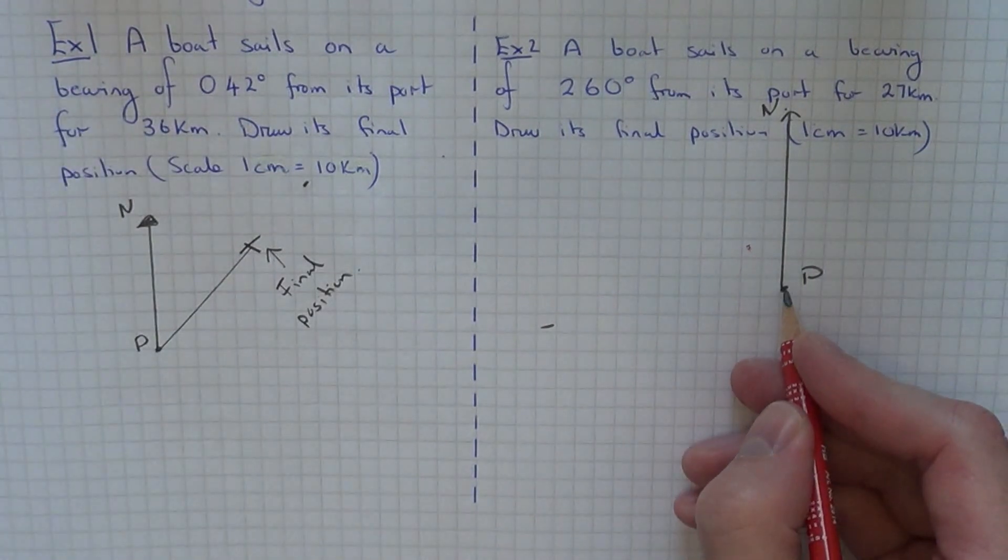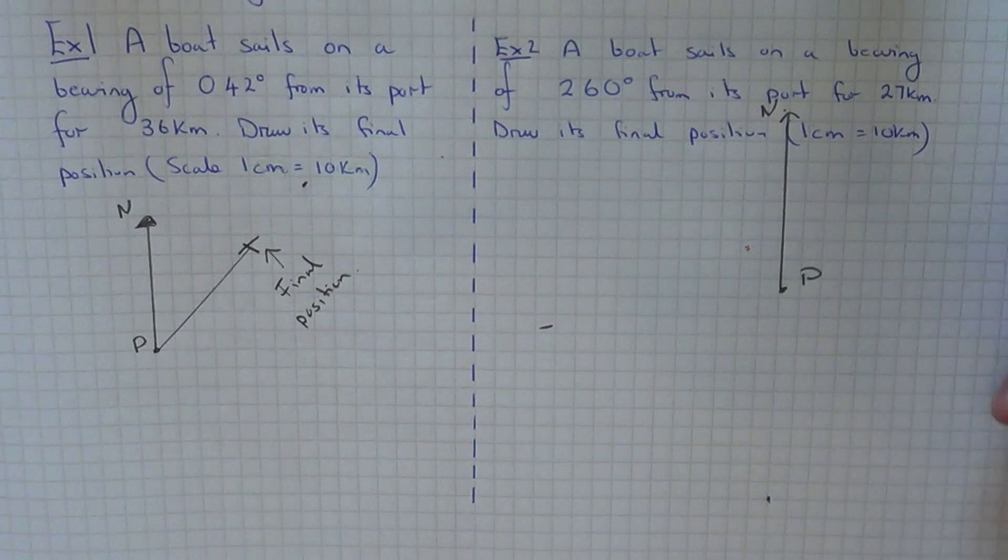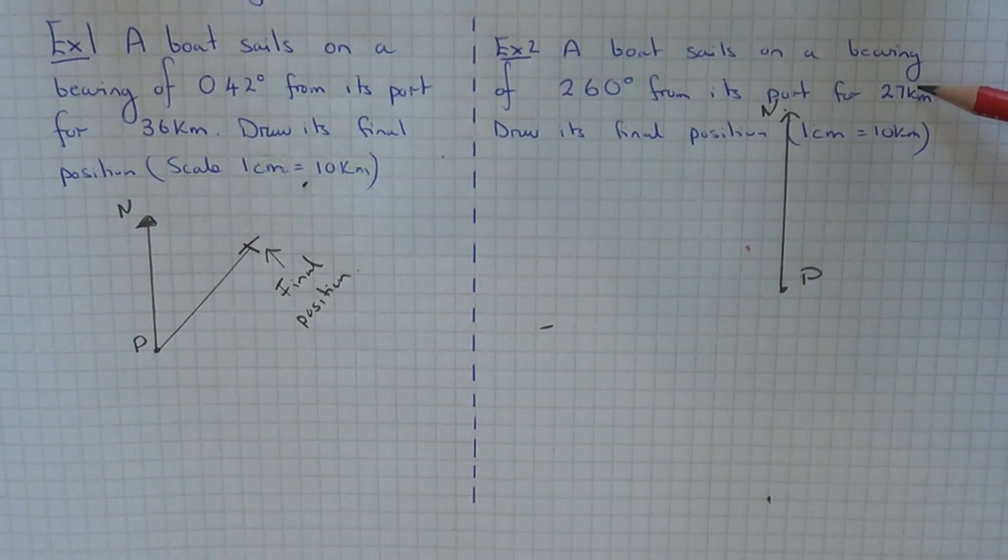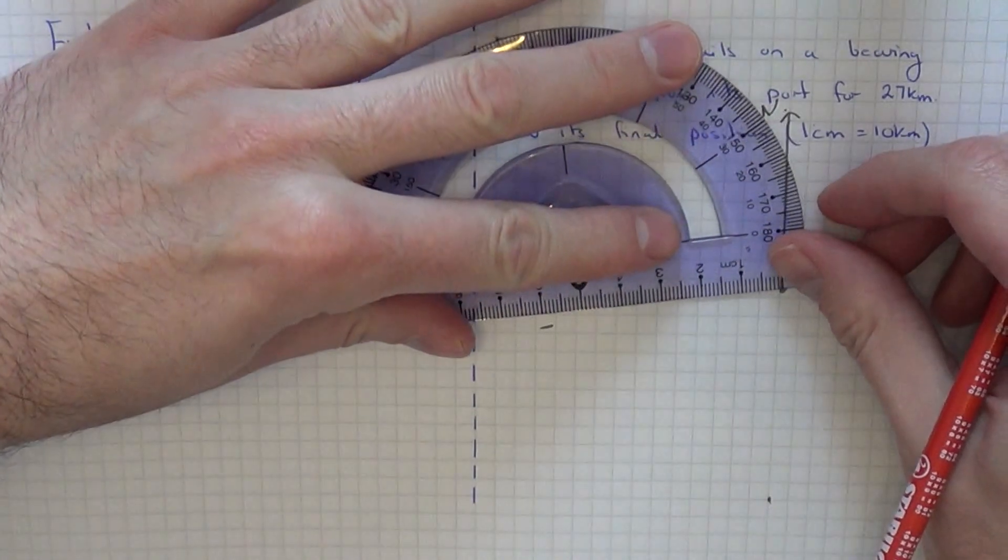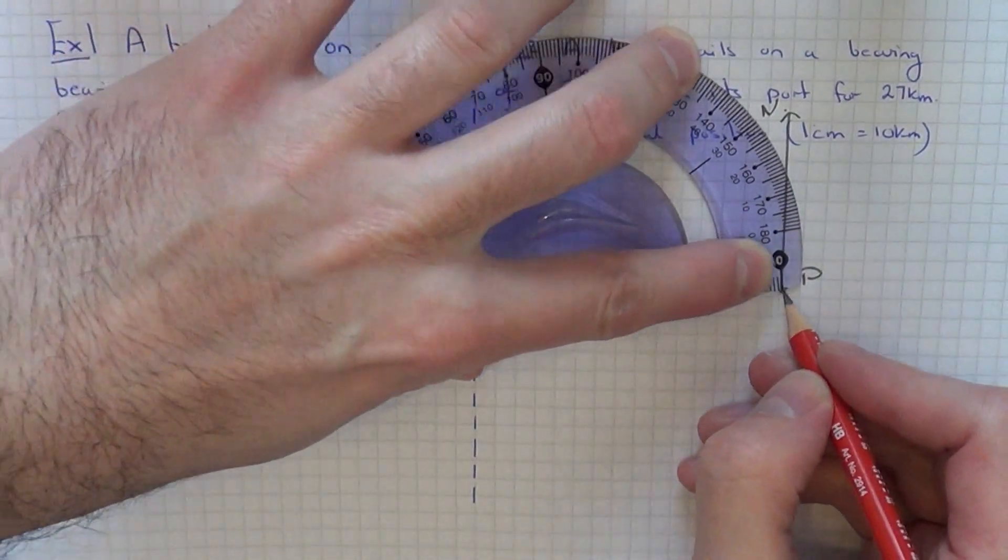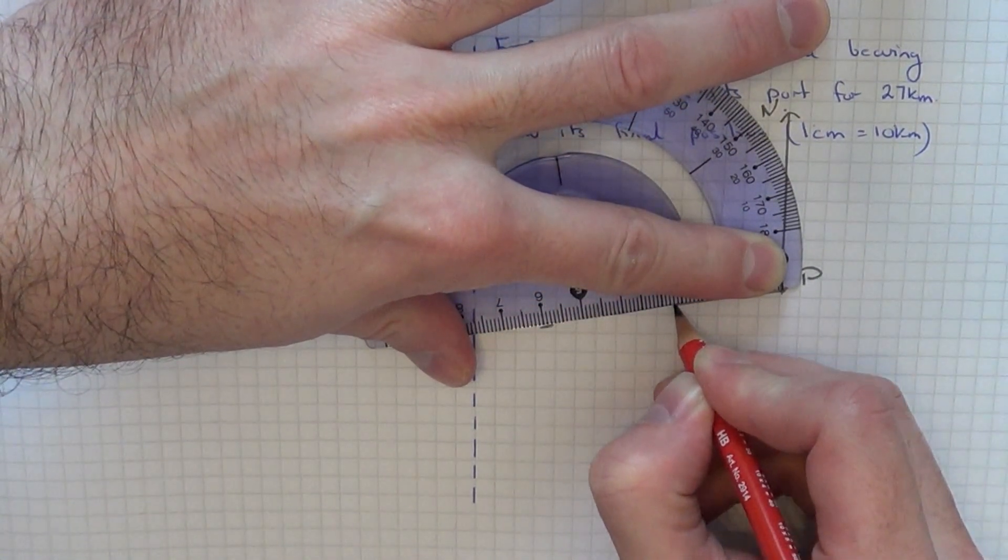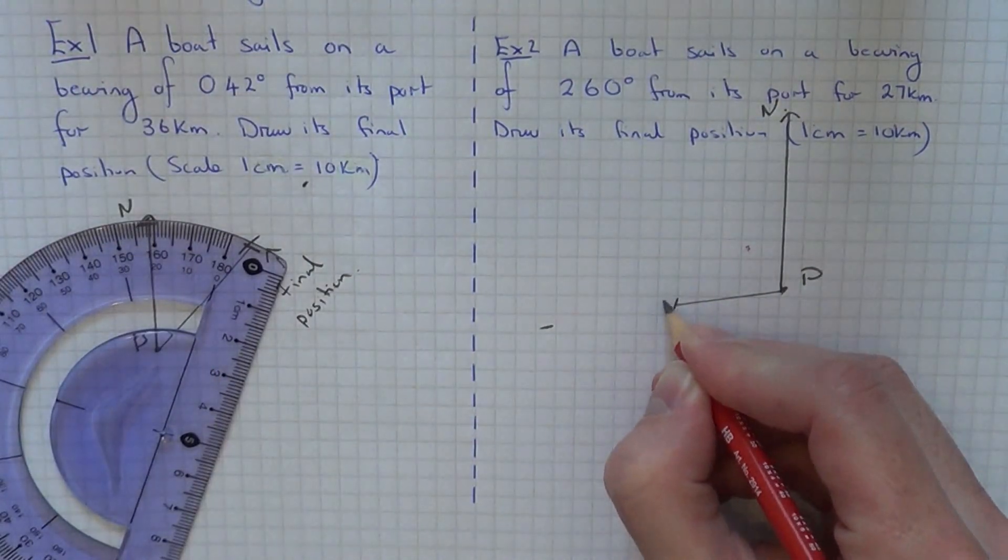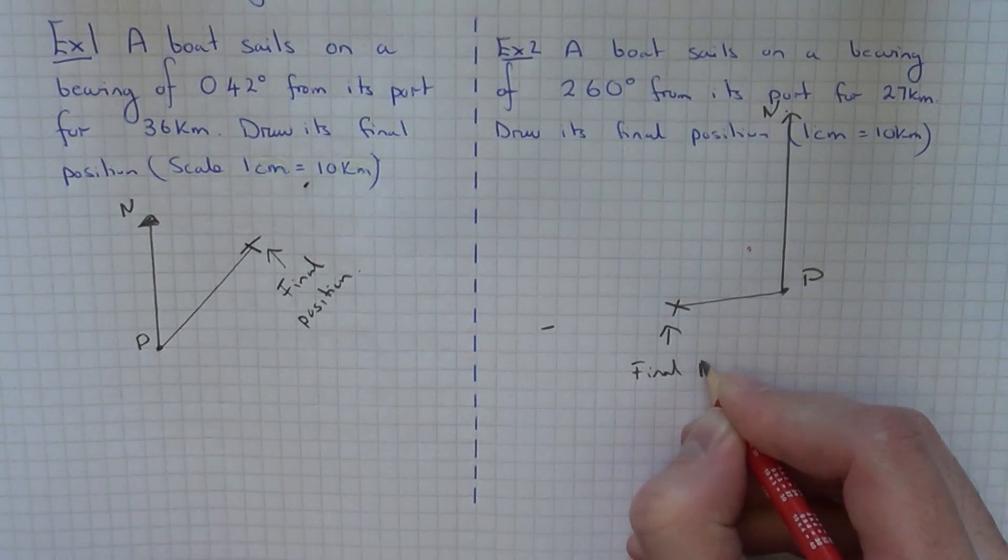We know that the boat is travelling in this direction here. Again we just need to get the correct length of the line. We need to divide 27 by 10 which gives us 2.7. The boat will travel along this line and end up here. That's your final position.